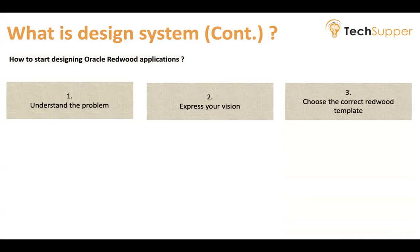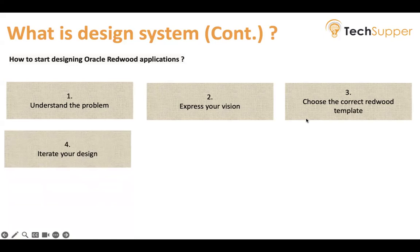Choose the correct RadWood template. RadWood comes with plenty of templates that you can use to develop your application. Oracle has a RadWood pattern book that you can apply to choose the correct template, which we will cover in further sessions. The Oracle RadWood pattern book shows how page templates support specific user goals, with different layouts and configurations to achieve multiple UI variants. When iterating your design, use the largest building block possible, which means less hand-coding by the development team.